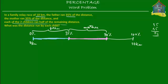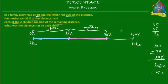So far 70% of the race has been run. Each of the two children ran half of the remaining distance. What's remaining is 100% minus 70%, which equals 30%. So 30% of the race is still left to be run. If each child ran half of 30%, then each child ran 15%.